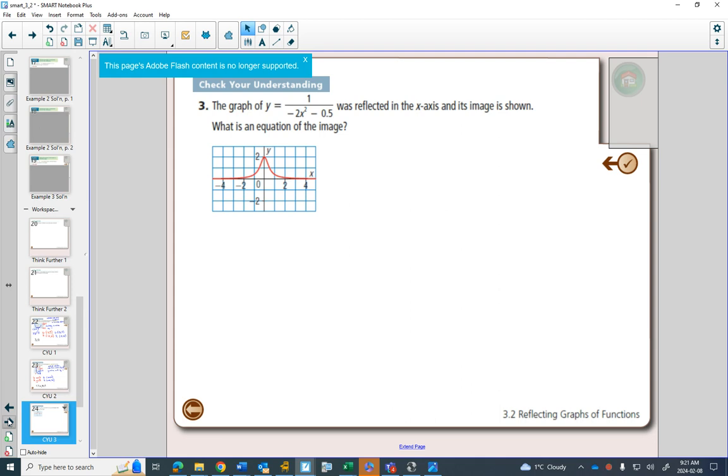The graph of y equals negative 2x squared minus 0.5 was reflected in the x-axis and its image is shown. So a couple things. First of all, you would see this, and again think about what kind of reflection is that. In the x-axis things are moving up and down,